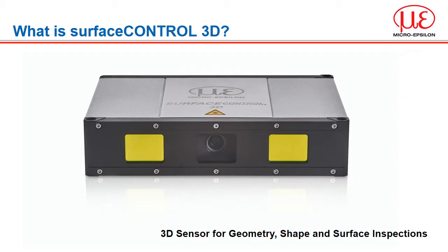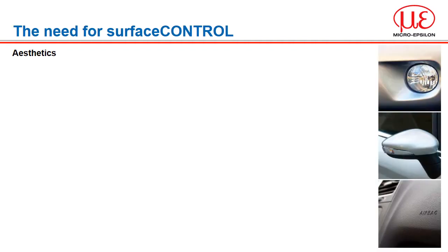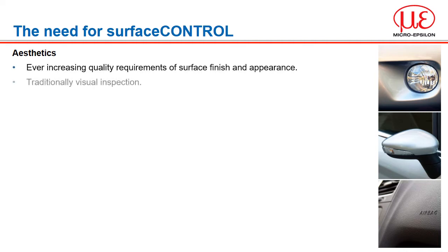So what is Surface Control? Basically it's a snapshot sensor for capturing geometry, shape and making surface inspections. In many products we as consumers are quite particular about how something looks and feels. In many cases the final quality check has been done by well-trained operators, but as humans there is always some degree of subjectivity about what is a pass or a fail.